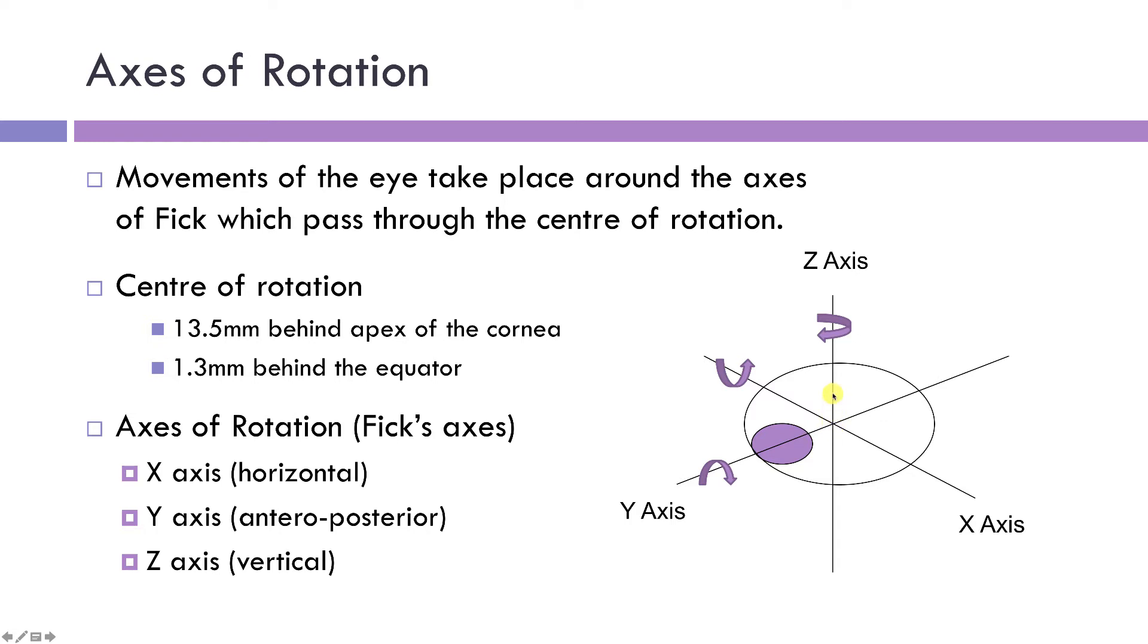Now any action that occurs around one of these axes will be very specific. One axis will relate to a horizontal eye movement, another to a vertical eye movement, and another axis to a torsional eye movement.